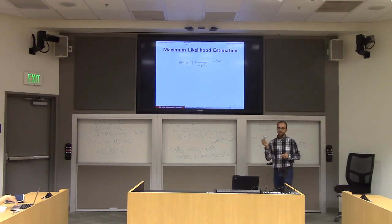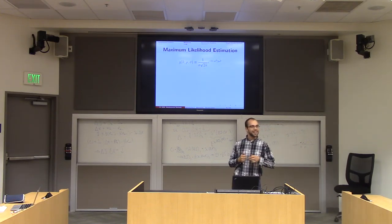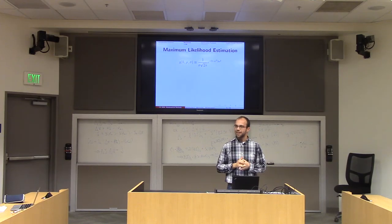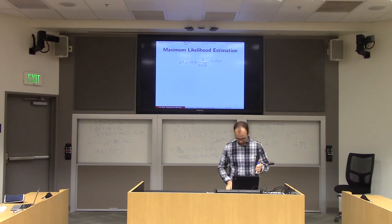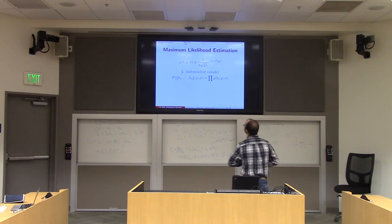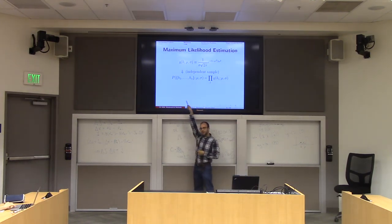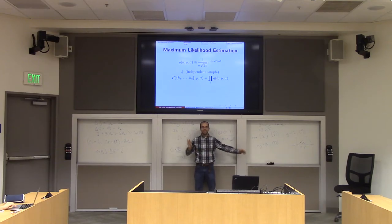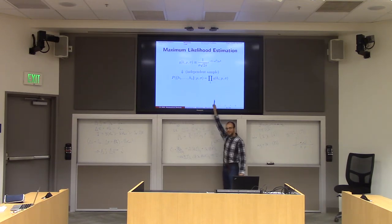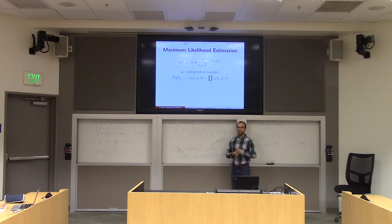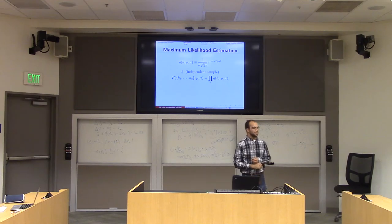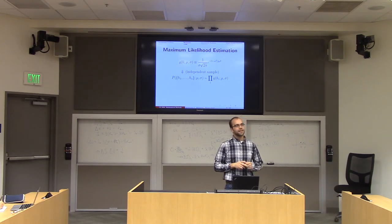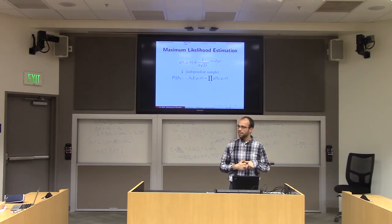If my height and Leonard's height are independently drawn from this distribution, then the likelihood of all heights h1 through hn happening simultaneously is just the product of the probabilities of each height one at a time — elementary probability.